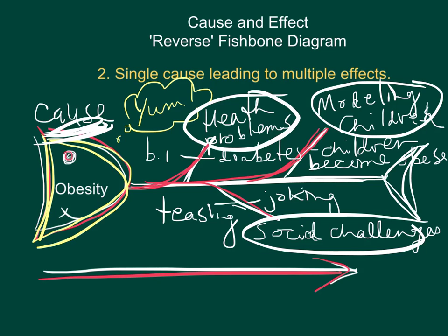Health problems include things like diabetes, blood pressure, and so on. So just like the fishbone diagram where many causes led to a single effect simultaneously, in this reverse fishbone diagram we have a single cause — obesity — leading to several effects. And that is the end of this presentation on fishbone diagrams used to illustrate cause and effect.